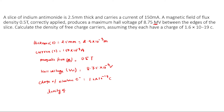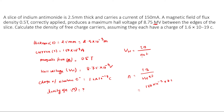Density of electrons: the Hall voltage formula is Vₕ = iB / (n·e·t). Substituting the values: Vₕ equals iB divided by n·e·t, where t equals 2.5 × 10⁻³.